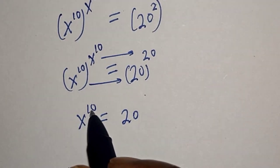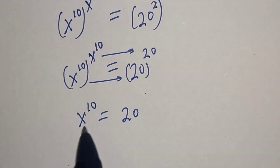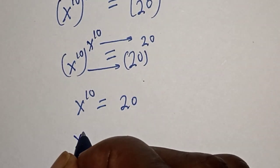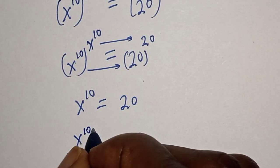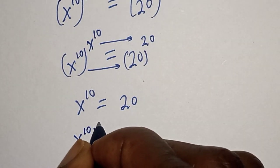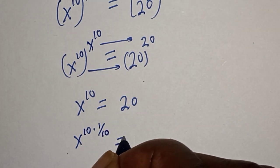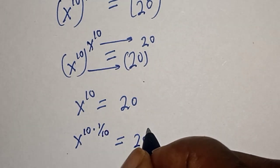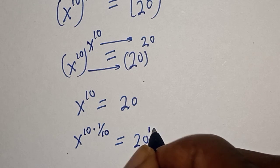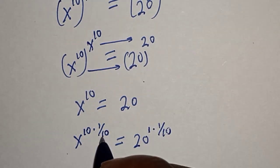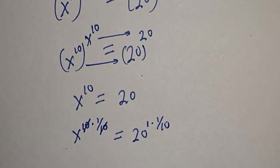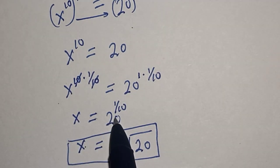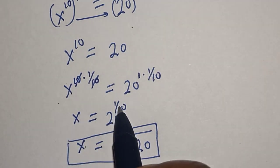Then s raised to power 10, multiplied by 1 over 10, is equal to 20 raised to power 1 multiplied by 1 over 10. The 10s cancel, so s is equal to the 10th root of 20.